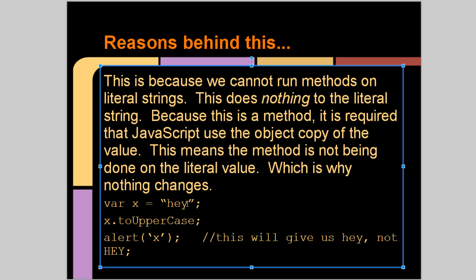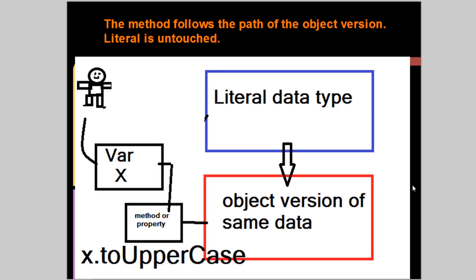So we have a variable x, it's the string "hey". We uppercase it and then we alert, which is just a way to test what variables are or show things on the screen. This will give us "hey" in lowercase letters, not "HEY" in all capital letters. So the method follows the path of the object version. The literal is untouched. So variable x, it's a method, so it goes to the object version of the same data.